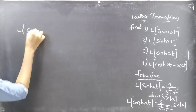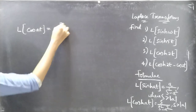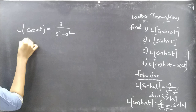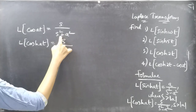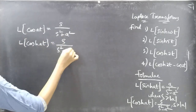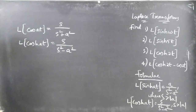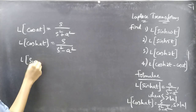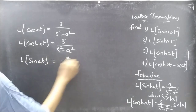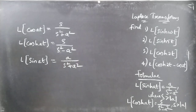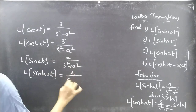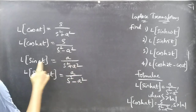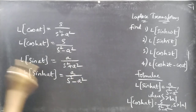We are going to use these two formulas. We know that L of cos(AT) is S by S squared plus A squared. Then L of cosh(AT) will have a minus in the denominator, so it becomes S by S squared minus A squared. Likewise, if L of sin(AT) equals A by S squared plus A squared, then the Laplace transform of sinh(AT) will be A by S squared minus A squared. If you have plus for the trig function, you will have minus for the hyperbolic function.